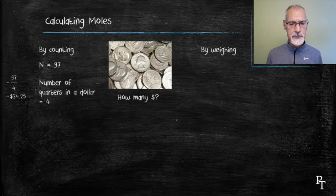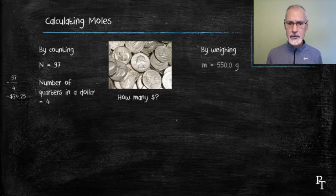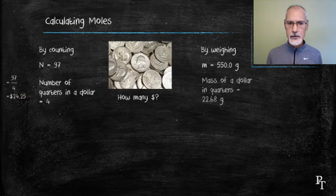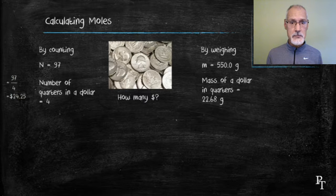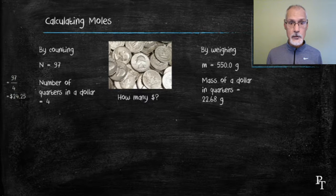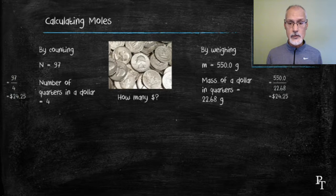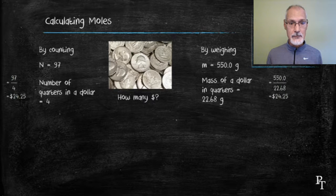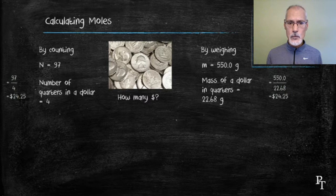Now, by weighing. I could weigh all the quarters. They weigh 550 grams. I could also find out what the mass of 1 dollar is by weighing 4 of the quarters. 22.68 grams. 550 divided by 22.68. And I arrive at the same answer. As well I should because I have the same amount of quarters. So I can determine how many dollars by counting and by weighing.